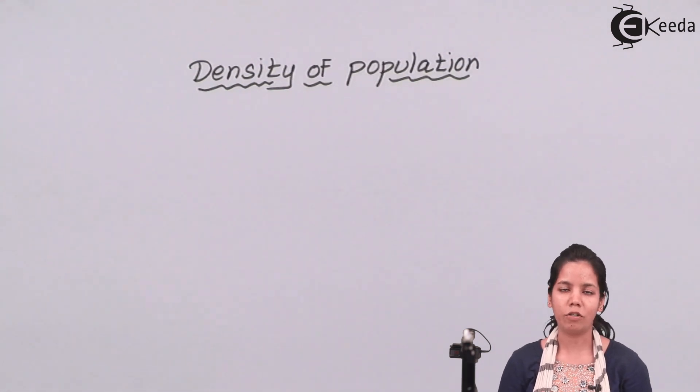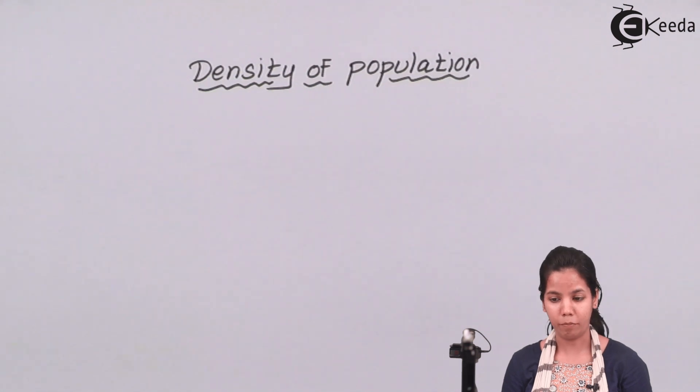So the simple definition of density of population is the total number of individuals living in a particular population per unit area.